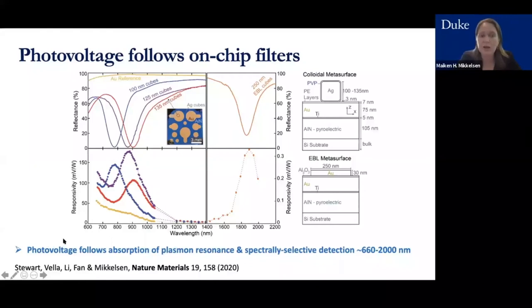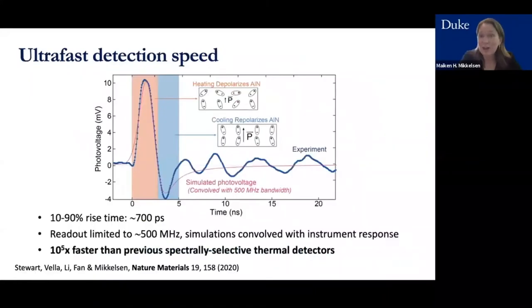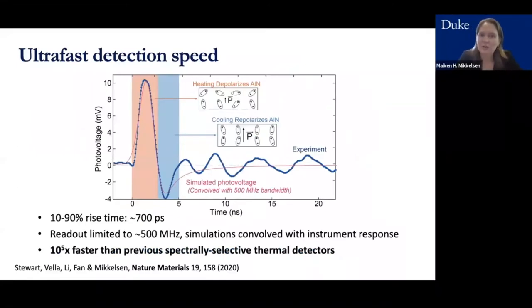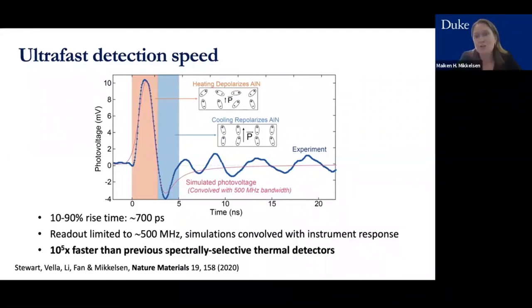These experiments demonstrate that the photovoltage follows the absorption of the plasmon resonance, achieving spectrally selective detection from 660 nanometers up to about 2 microns. We also discovered something that was a bit of a surprise: an ultrafast detection speed — much faster than is typically seen in pyroelectric detectors and more broadly in spectrally selective thermal detectors.